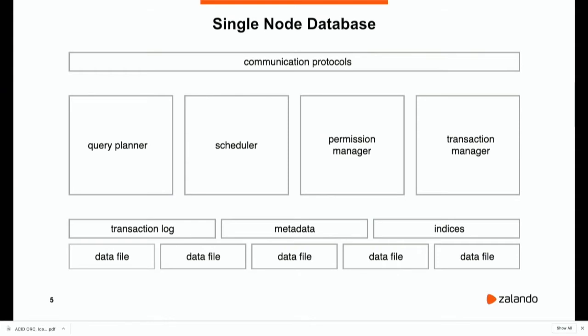Now, those properties are guaranteed by basically every single-node database. But to maintain those guarantees, even in a single-node database, it still takes a lot of work — you need to have, on top of the data files, transaction logs, metadata about the schema, indexes, write-ahead logs, and so on. There will be this entire machinery of query planning, query execution, scheduling, managing transactions, managing logs, and all of this is covered by the communication layer, which may mean a RESTful API like in Elasticsearch, or an interface like ODBC or JDBC.